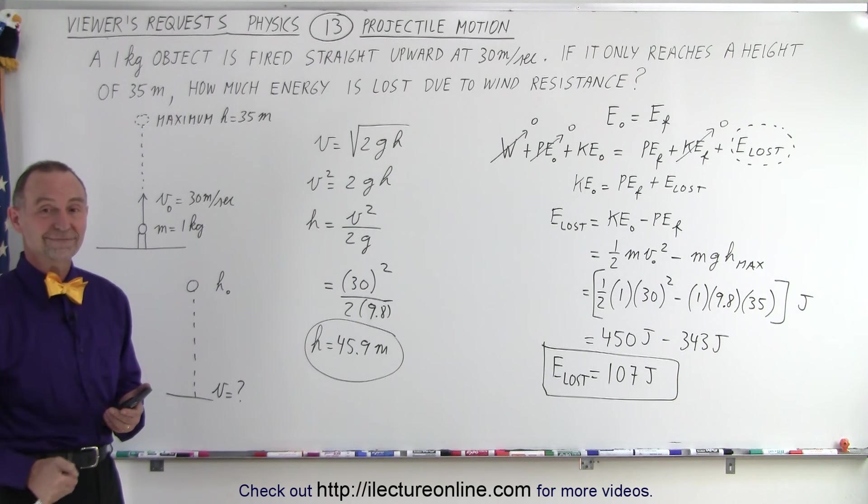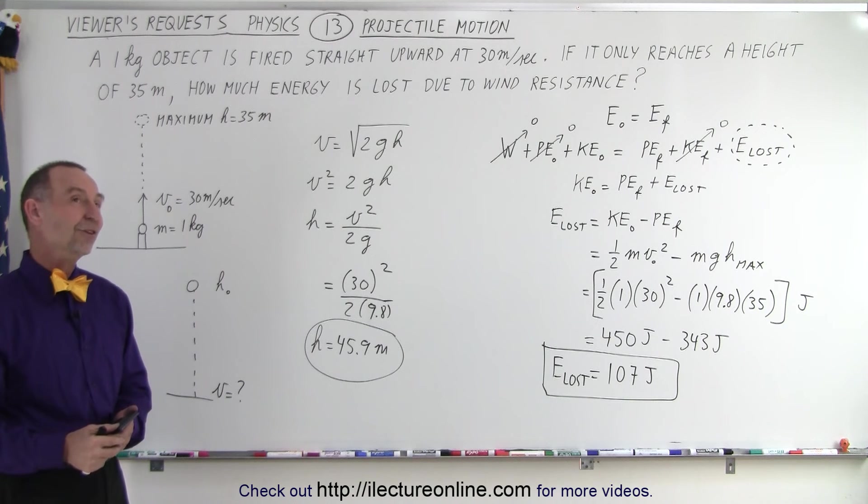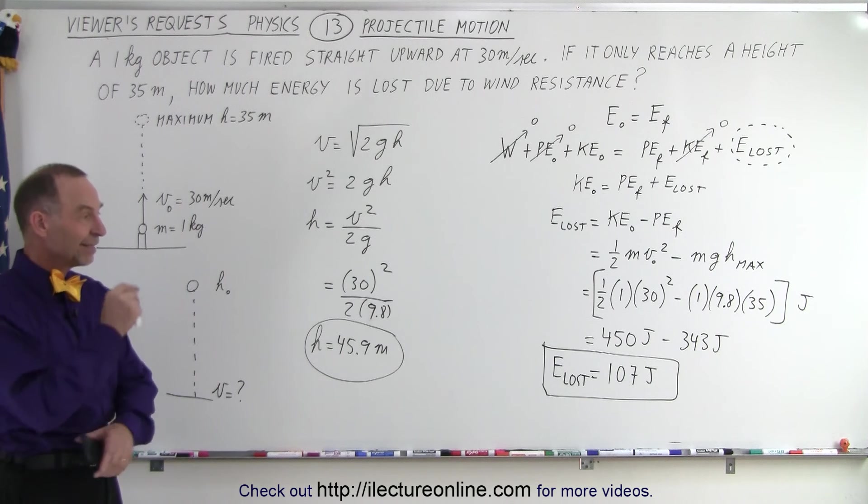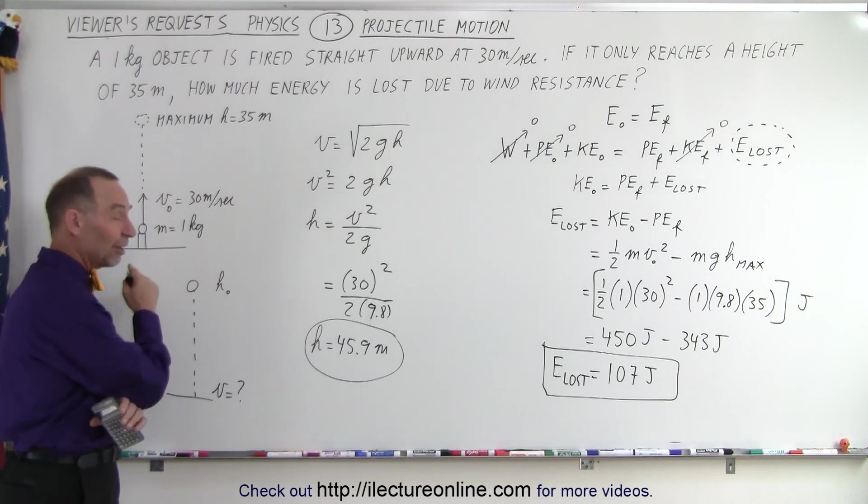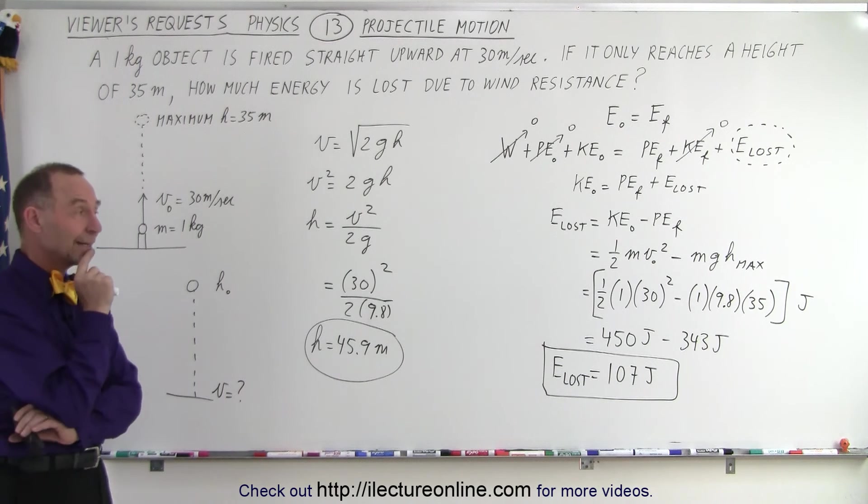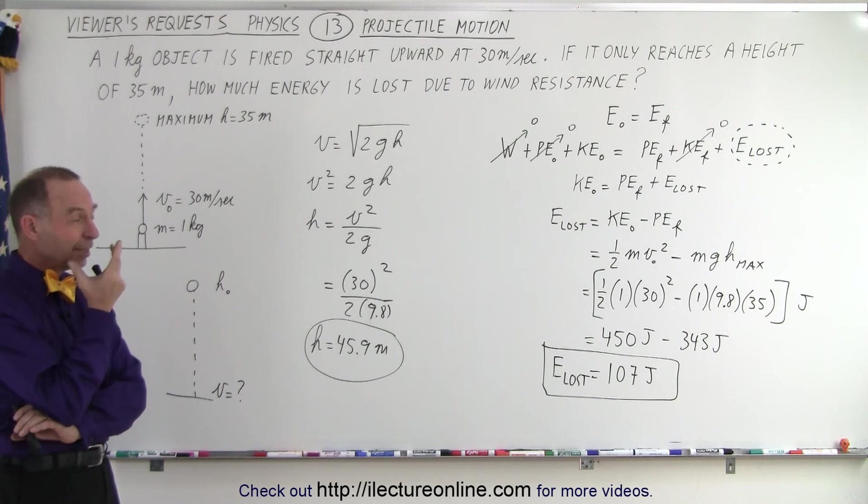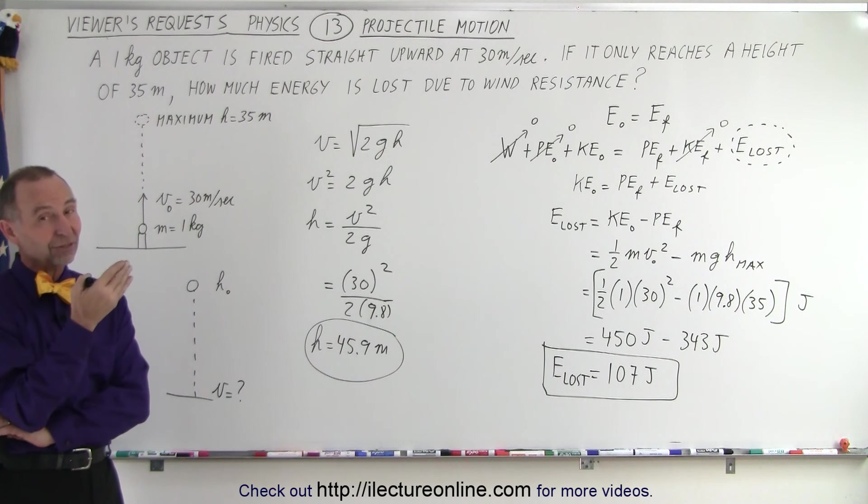What about the energy loss on its way down? Well, that is interesting because that will probably be a different amount. We would have to be told what the final velocity would be to find the energy on the way down, the energy lost on the way down. So, typically, the energy loss has to do with the velocity.